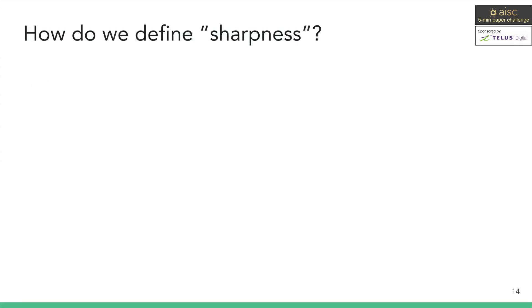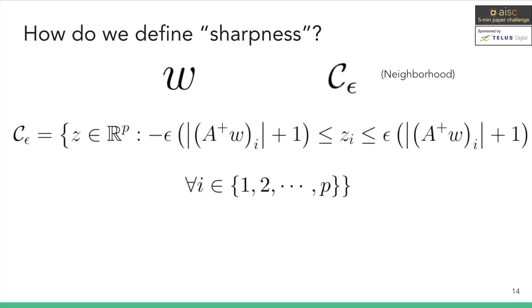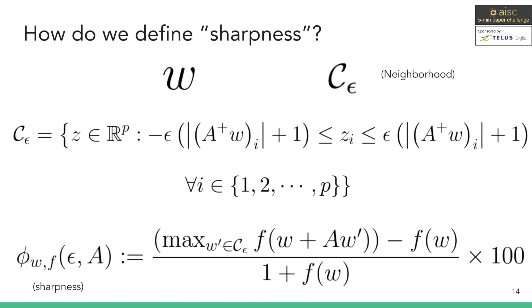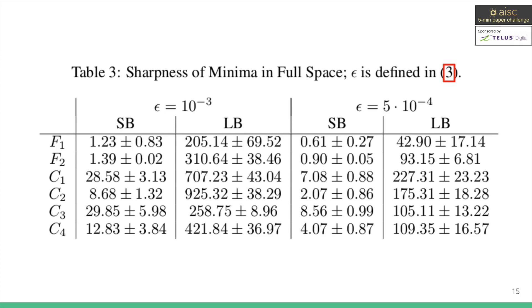So how can we quantitatively calculate the sharpness of the region? For the interest of time, I won't go into details. But the gist of the idea is to define the neighborhood of the point in the parameter space and measure the maximum value in that neighborhood, which serves as an approximation of how sensitive a neighborhood is to perturbation. And with the definition of sharpness, the authors ran more experiments that quantitatively show that large batch sizes indeed make parameters land in much sharper regions, as indicated by high values of the LB columns here.